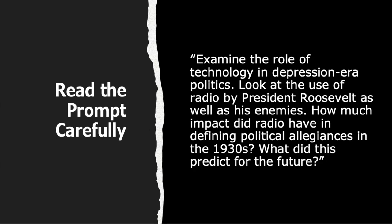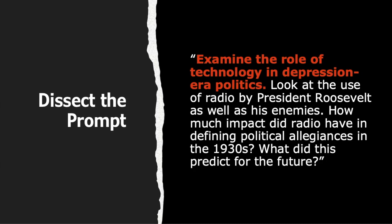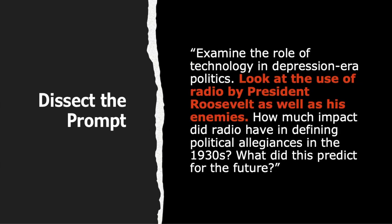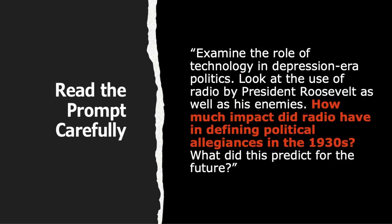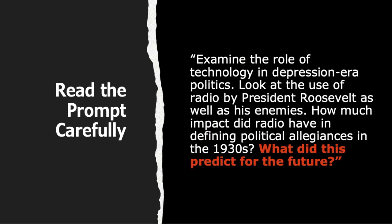After you've read your prompt very carefully, you want to look at the component parts and dissect the prompt. The first sentence examines the role of technology in Depression-era politics. Another sentence asks us to look at the use of radio by President Roosevelt and his enemies. We're also asked how much impact did radio have in defining political allegiances in the 1930s. It's very important to make sure that you read carefully the prompt, because many times students don't answer all the questions. When you don't answer all the questions, your instructor cannot give you full credit when you leave parts of the answer out.